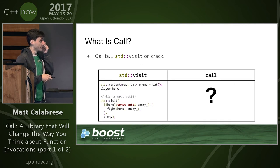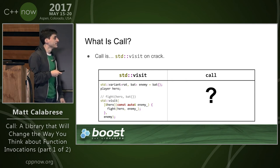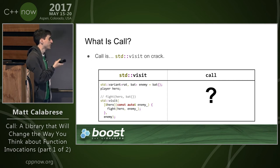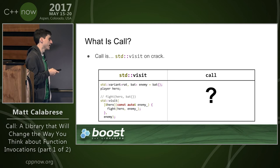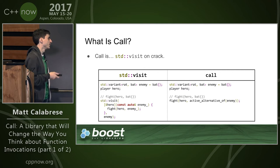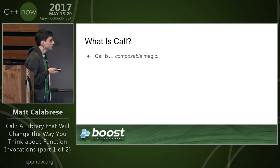Call is also 'std::visit on crack.' Imagine you have a std::variant of rats and bats and you have a player, and you want the hero to attack an enemy. You have a binary function 'fight' that takes the player and the thing it's attacking — currently you'd have to create a lambda. With call, it's much simpler: you just write 'fight(hero, active_alternative_of(enemy)).' Behind the scenes it creates the lambda for you because it knows which thing to expand via this placeholder.